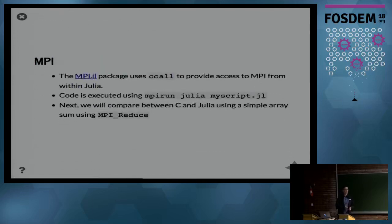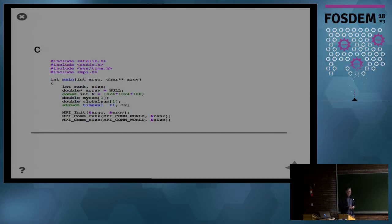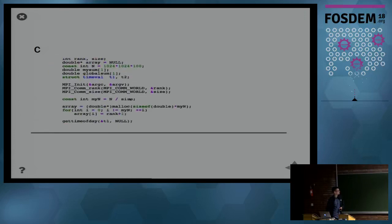Next is the integration of MPI. Using this ccall primitive where we can call C functions, we can of course also call the MPI C functions. If we write a Julia program using these wrapped MPI functions, we can just run this using mpirun julia and then the script that we created. We will compare between C and Julia using a simple MPI reduce.